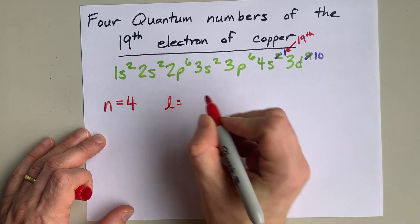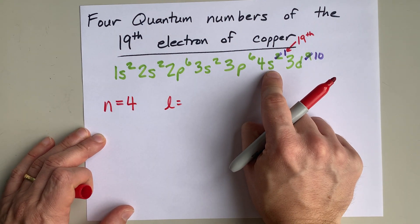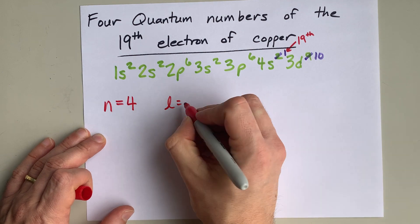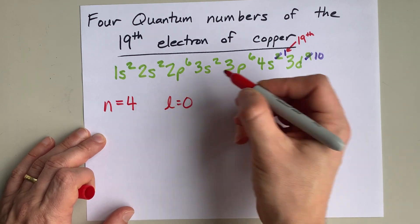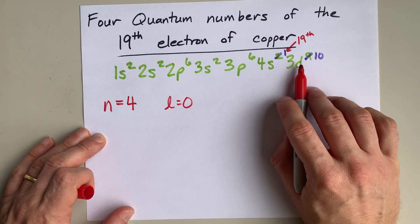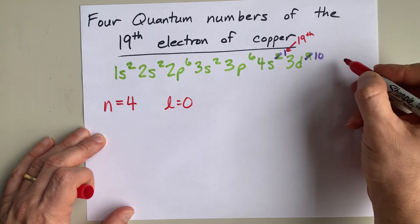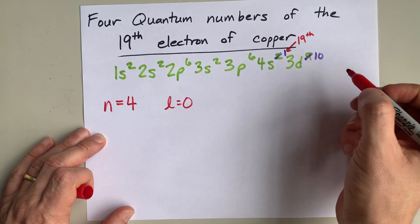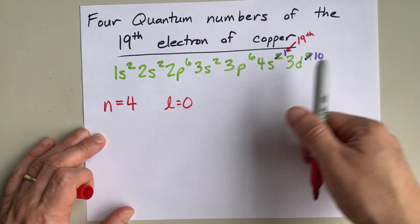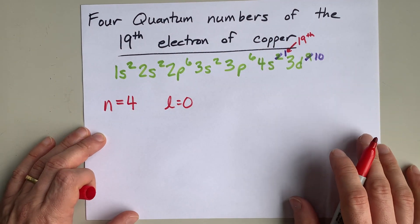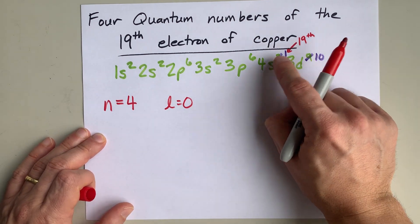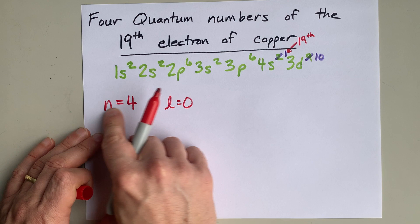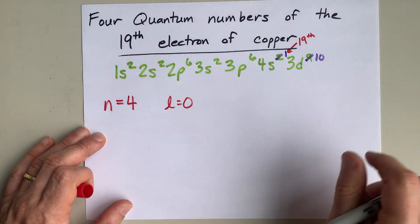L is also given to you by the letter. S represents L equals 0. P represents L equals 1. D is L equals 2. F, which we have none of here, is L equals 3, and it goes on like that alphabetically. But 4s, knowing that the 19th electron is 4s, gives us these two numbers right off the bat.